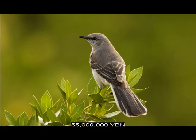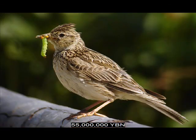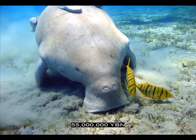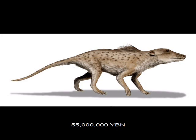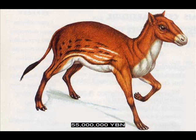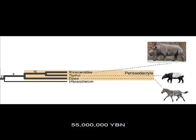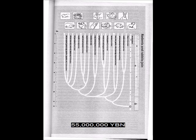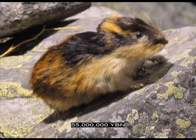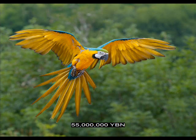Afrotheres — elephants. Afrotheres — manatee and dugong. Laurasiatheria Cetartiodactyla evolve — ancestor of all Artiodactyla, also called even-toed ungulates: camels, pigs, ruminants (deer, giraffe, cattle, sheep, and antelope), hippos, and all Cetacea (whales and dolphins). Laurasiatheria Perissodactyla evolve — also called odd-toed ungulates: horses, tapirs, rhinos. Rodents Rodentia. Rodents Myomorpha: rats, mice, gerbils, voles, lemmings, hamsters. Birds Psittaciformes — parrots. Last common ancestor between hippos and dolphins and whales. Earliest marine mammal.